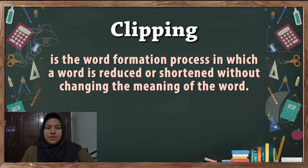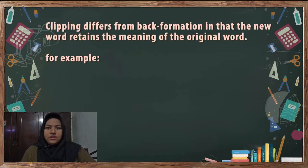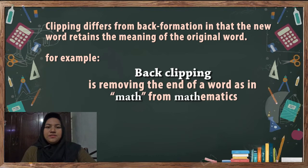Third is clipping. Clipping is the word formation process in which a word is reduced or shortened without changing the meaning of the word. Clipping differs from back formation in that the new word retains the meaning of the original word. For example, first, back clipping: back clipping is removing the end of words, as in math from mathematics.